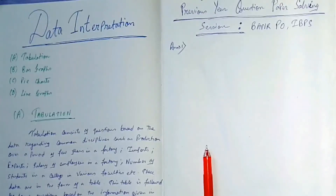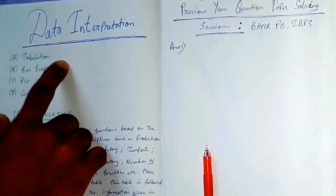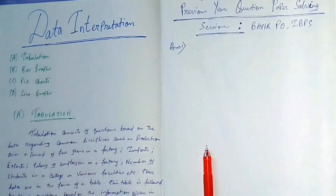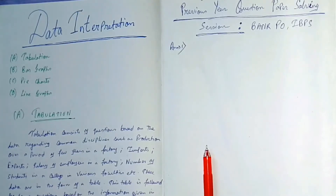Hello everyone, welcome to all the competitor exam. Today we will be discussing a new topic for mathematics — Data Interpretation. From data interpretation there are basically four topics: tabulation, bar graphs, pie charts, and line graphs. This is a very important topic for any competitive exam, mainly for banks, railway, and SSC exams.